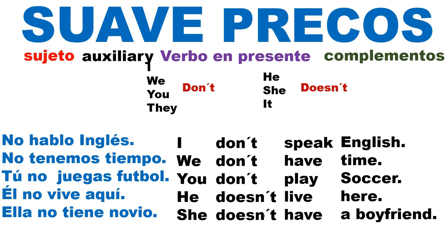Repeat after me: I don't speak English. We don't have time. You don't play soccer. He doesn't live here. She doesn't have a boyfriend. As you can see, the pronunciation changes a little when we speak more naturally — 'don't' sounds almost like a D becoming an R. It's important you know this because almost all words in English have two pronunciations: one spoken in isolation, and one spoken in context with other words.